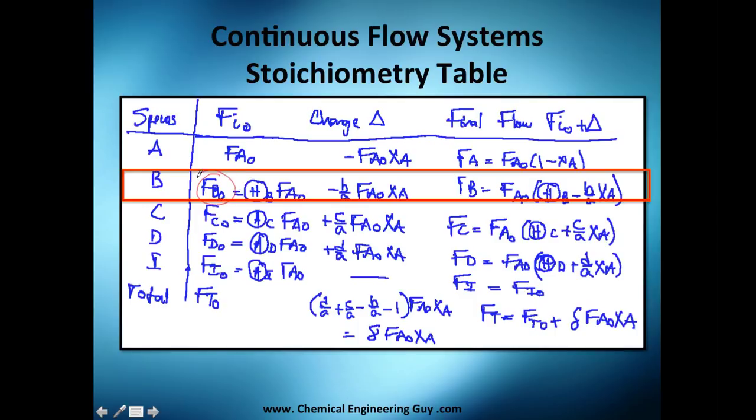So our initial flow rate can be defined by this theta value here. Remember, this theta value was moles of B at the initial moment and moles of A at the initial moment. Well, if we divide it by time, we have the same: flow rate of B at the initial time divided by flow rate of A at the initial time. That's why we can still use this number here.